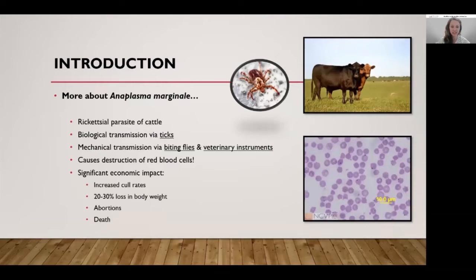When an animal gets infected with this organism, it infects the red blood cells and causes destruction of those cells. Infection with Anaplasma marginale can lead to significant economic impacts, including increased cull rates within a herd, as well as 20 to 30% loss in body weight in infected individuals, abortions, and acute death.